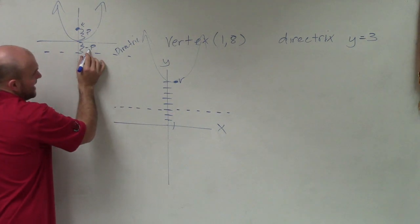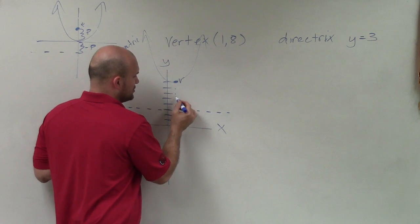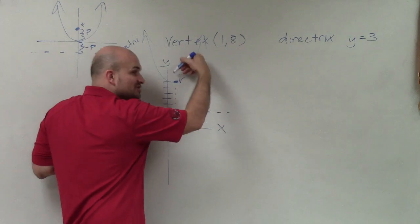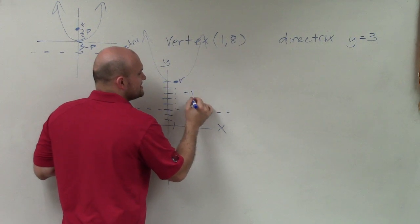Remember, if that's p, this is negative p. So actually what I can do is just say, well, the distance from the vertex to directrix is 1, 2, 3, 4, 5. But it's going in the negative direction, so it's negative 5. But remember, it's negative p.